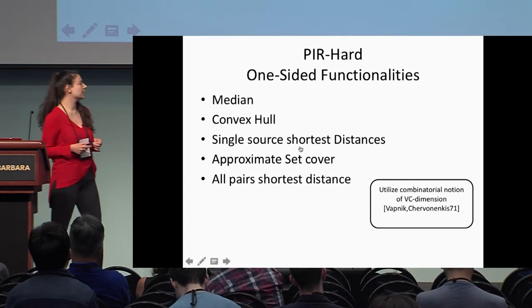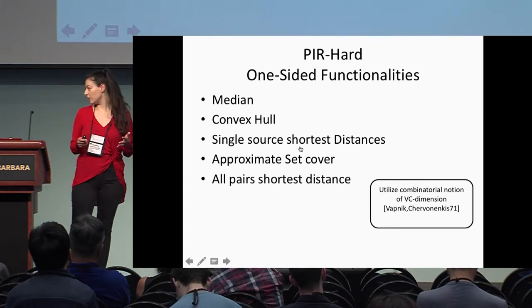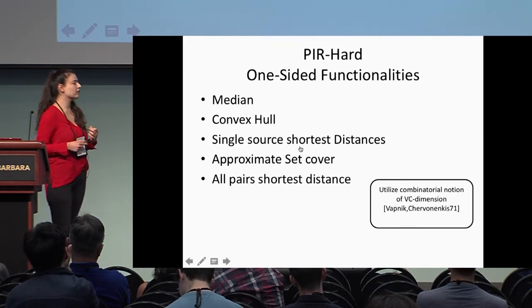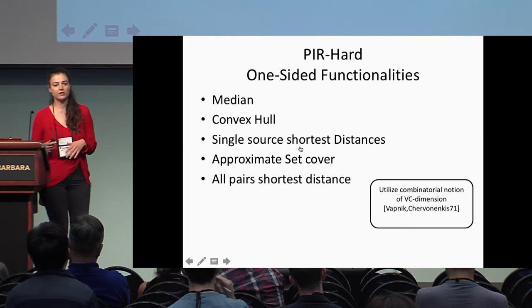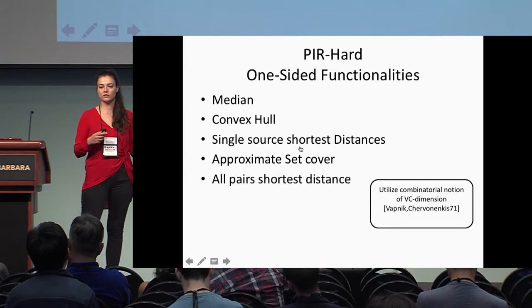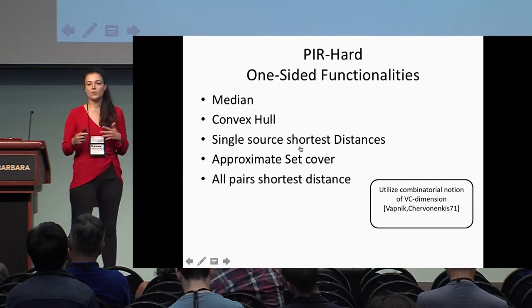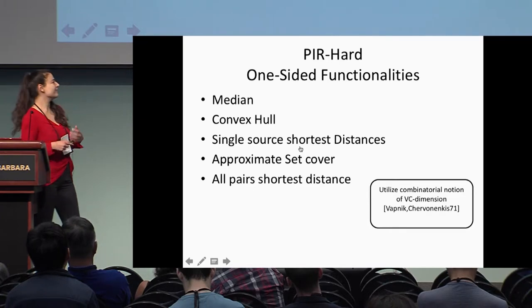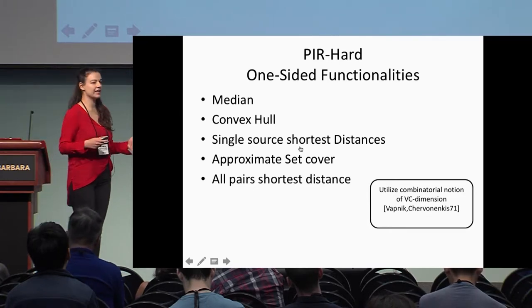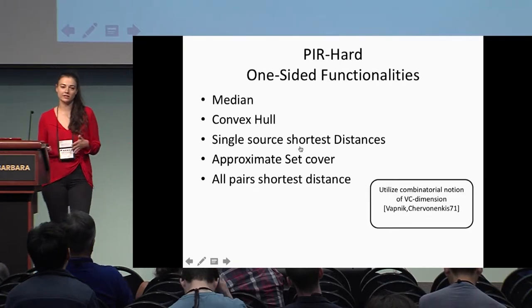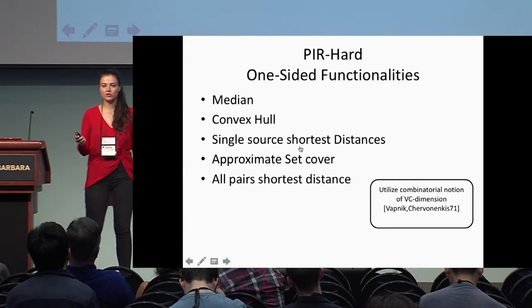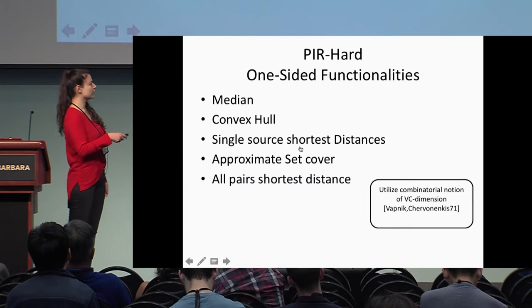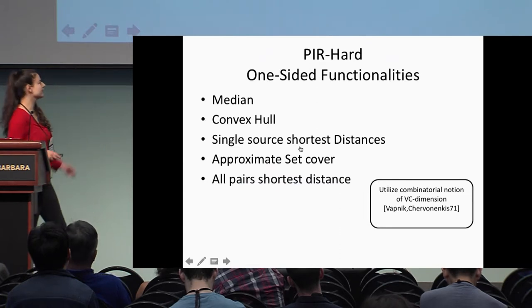This measure tells us about the capacity or richness of a function. A functionality is PIR-hard if it has a certain VC dimension — essentially, we're measuring how much PIR we can squeeze out of some functionality. If a functionality has high VC dimension, it's PIR-hard; if it has low VC dimension, it's not PIR-hard.